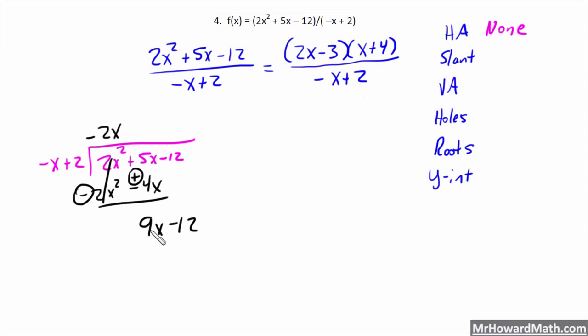What times negative x gives me 9x? That would be minus 9. So, we get positive 9x there. Negative 9 times 2, minus 18. Flip it to plus. That cancels. Negative 12 plus 18 is 6. So, our remainder is plus 6 over negative x plus 2. We don't care about the remainder. We focus on this. This is the equation of our slant. Y equals negative 2x minus 9.